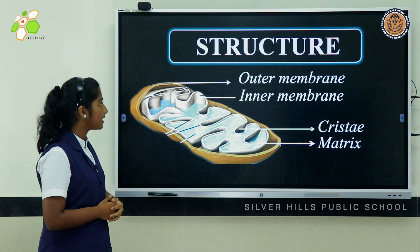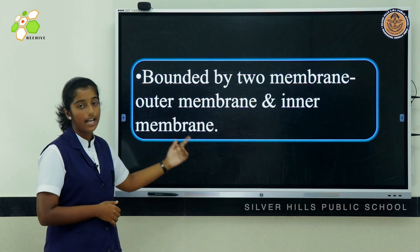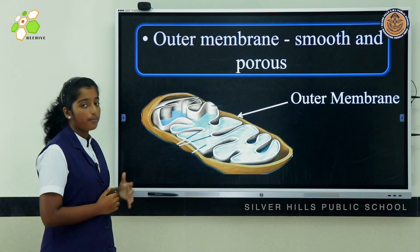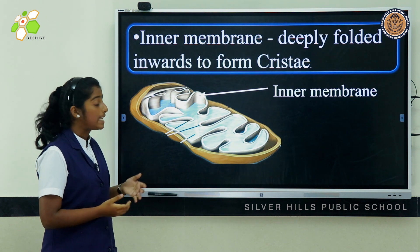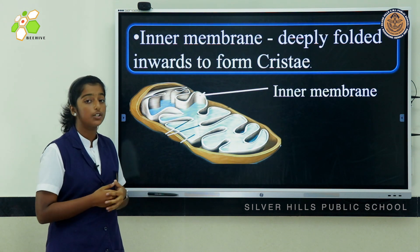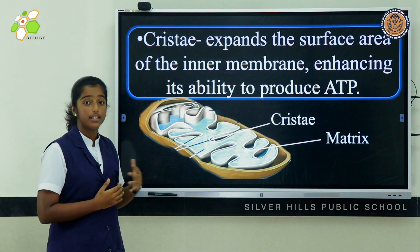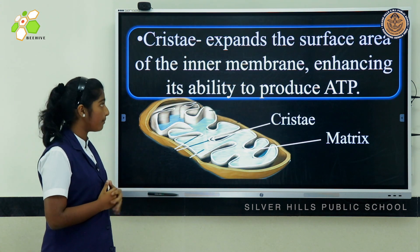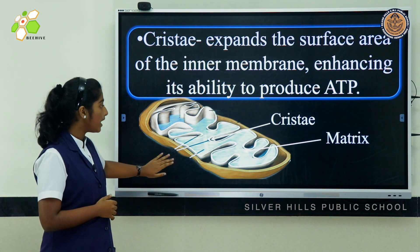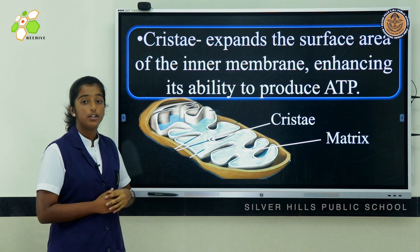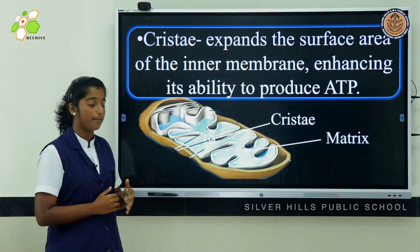As we can see, mitochondria is bounded by two membranes — an outer membrane and an inner membrane. The outer membrane is smooth and porous, and the inner membrane is deeply folded inwards to form cristae. The cristae expands the surface area of the inner membrane so that more ATP can be produced. The matrix is the fluid stored inside, and ribosomes and DNA can be found inside.